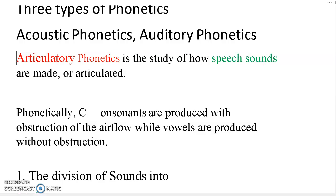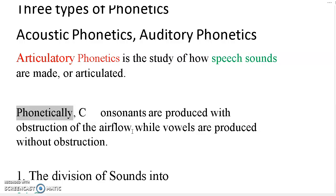In articulatory phonetics we study the division of sounds — how sounds are produced and how they are divided. Sounds are mainly divided into consonants and vowels. Phonetically, according to their production, consonants are produced with obstruction of the air flow — the air coming up from the lungs is stopped partially or completely at some point of production.